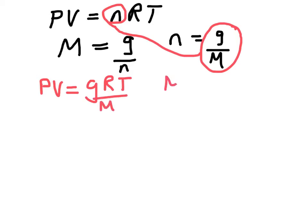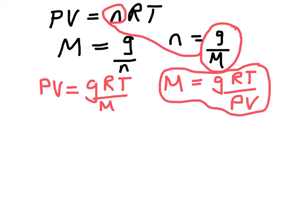And this is generally written as molar mass is G RT over PV. And this is a really useful equation to us when we want to find the molar mass of a gas.